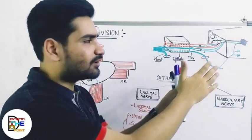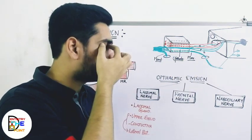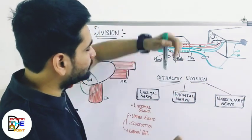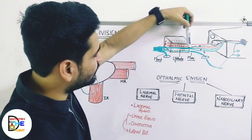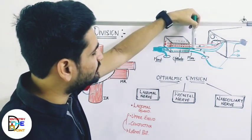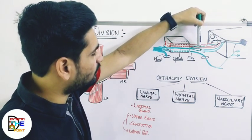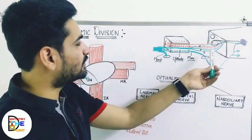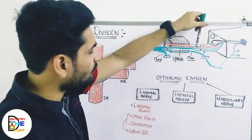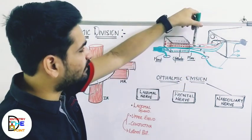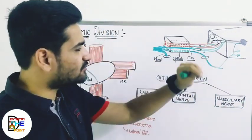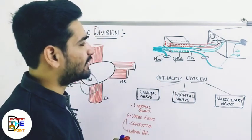We are seeing a 2D side view here: first is the cavernous sinus, then the orbit. Just before or as it crosses the cavernous sinus, it gives three divisions: lacrimal, frontal, and nasociliary. The lacrimal one will be the lateral most — L for lacrimal, L for lateral. Frontal is also lateral, and nasociliary will be a bit medial. So the medial most branch is nasociliary and the lateral most branch is lacrimal.